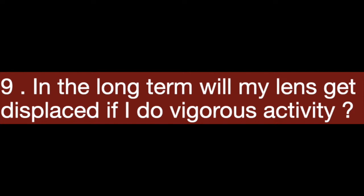Will my lens get displaced in the long term if I do vigorous activity? The ICL is placed in the eye in such a way that any kind of physical or vigorous exercise will not have an effect on the stability of the lens. However, if the patient has a trauma or injury to the eye — such as blunt trauma or a penetrating injury — there is a possibility that the lens can get displaced and would need surgical intervention to bring it back to its place.